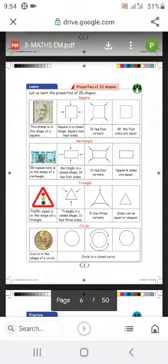Rectangle is a closed shape where the opposite sides are equal, for example five rupees notes.